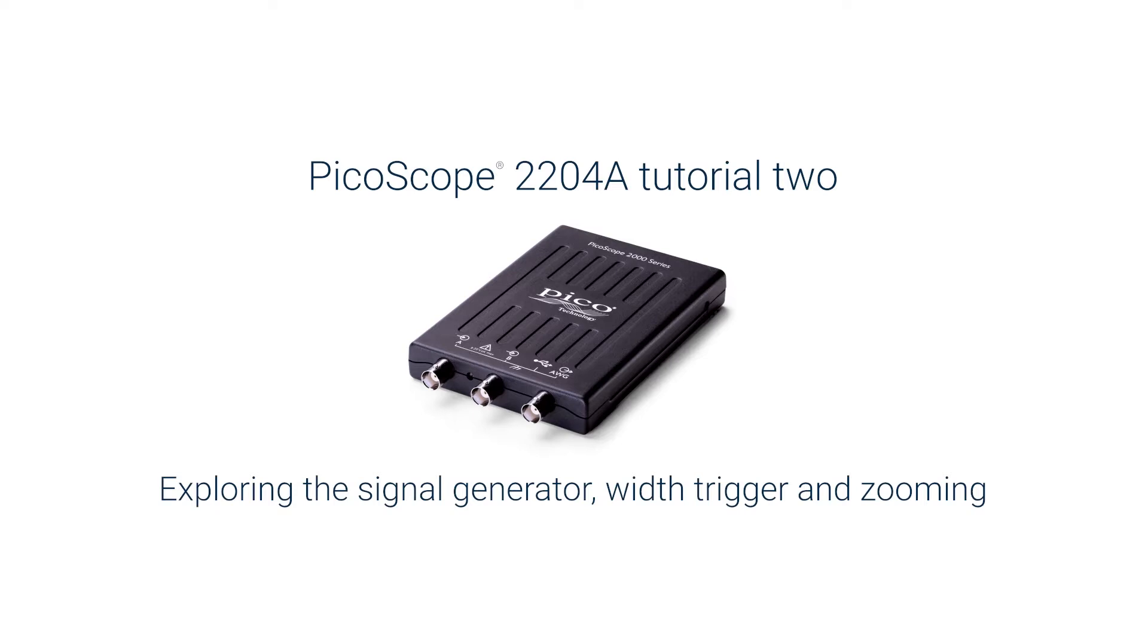In part 2, we explored the signal generator further and used the arbitrary waveform generator or AWG to create a glitch and then set up a trigger condition to isolate it.